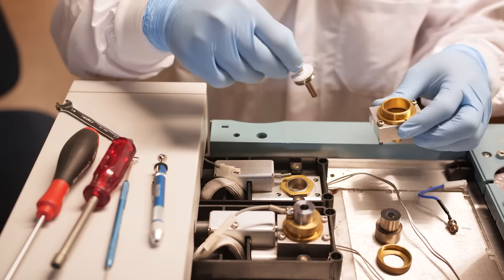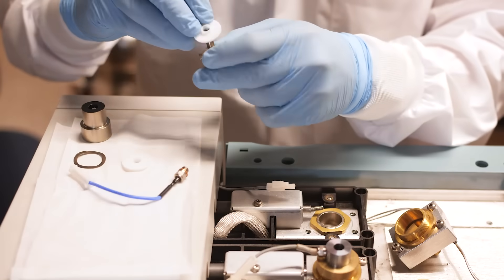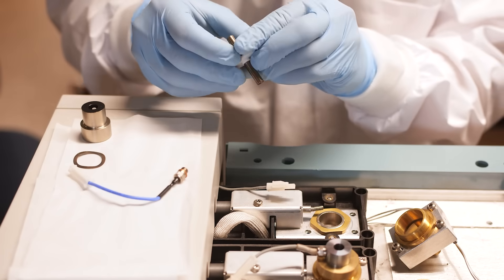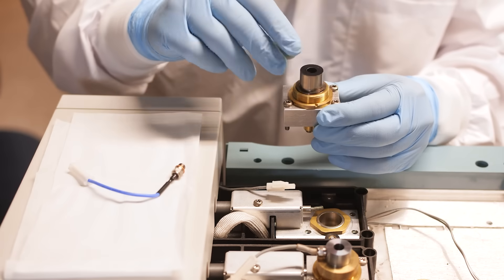Before replacing the new parts, I like to clean out the FID body with a little bit of methanol. Once this is done, we can replace the castle, the PTFE insulators, the collector, and the rubber housing gasket.